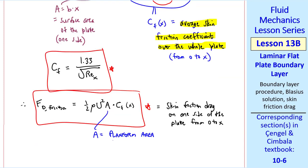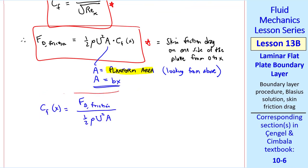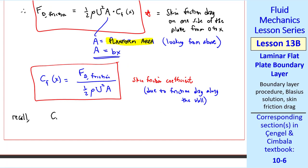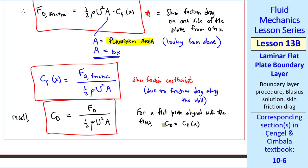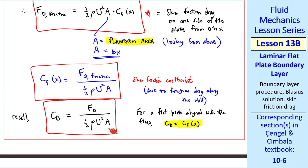Where A is called the planform area, which is the area looking from above, which is here B times x. We can write it this way. Cf of x is FD friction over 1 half rho u squared A, which as I said is called the skin friction coefficient, due to friction drag along the wall. Recall the drag coefficient from a previous lesson, which was FD over 1 half rho u squared A. So for a flat plate aligned with the flow, drag coefficient is the same as Cf of x, provided that we use the correct A.